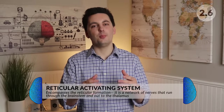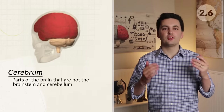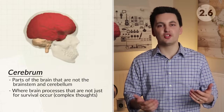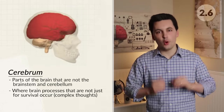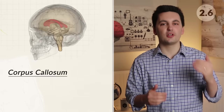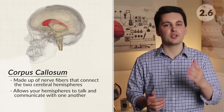The reticular activating system encompasses the reticular formation — it's a network of nerves that run through the brain stem and out to the thalamus, helping stimulate higher centers when something important needs immediate attention. We've been talking about the midbrain and hindbrain, which mainly focus on involuntary functions. The next structures are part of the forebrain. The cerebrum is the name of the brain parts that are not the brain stem and cerebellum — here the brain processes information beyond survival, such as complex thoughts. The cerebral cortex is a thin layer of billions of nerve cells that cover the whole brain, and inside it is the corpus callosum, made up of nerve fibers that connect the two cerebral hemispheres, allowing them to communicate with one another.